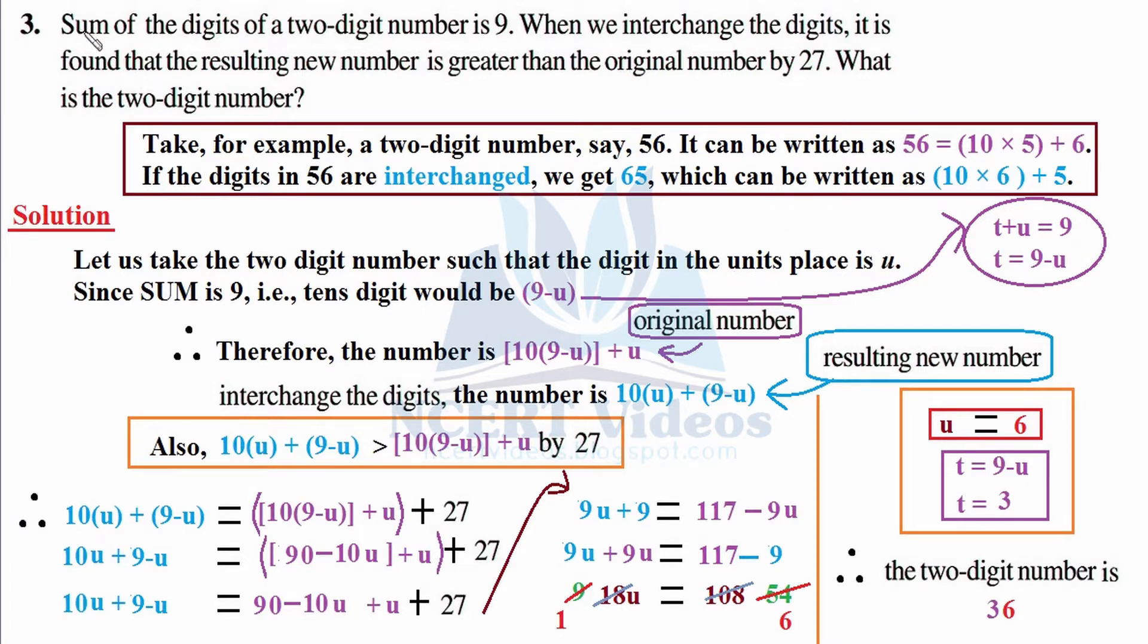The very first statement says sum of the digits of a two-digit number is 9. So since sum is 9, if we have tens digit and add unit digit to it, we get 9. By transposing, the tens digit would be 9-u.